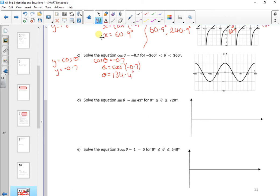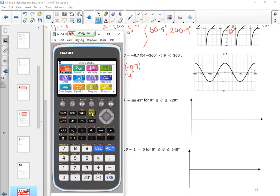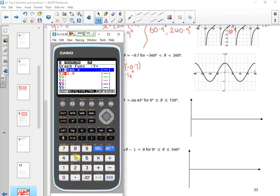Right, so we're going to look on the graph, so I'm going to graph it now. So menu 5, so I'm going with cos x. So f2, f1 together, cos x, and it was minus 0.7.